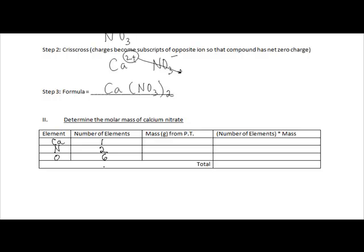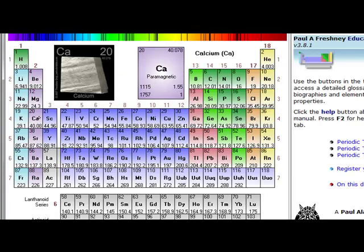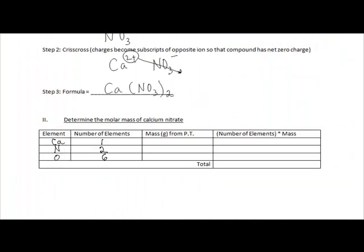Our next step does require us to use the periodic table. I don't know very many people who are going to sit as high school students and memorize the masses of all these elements. So we look at calcium, and we can see right away from the periodic table that calcium has 40 grams per mole. So we go back to our table, and we fill this in with 40.